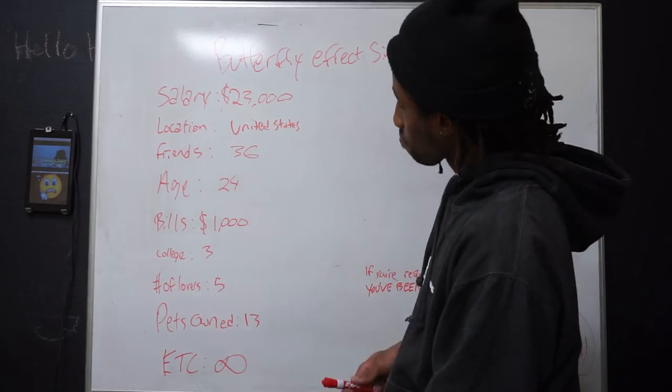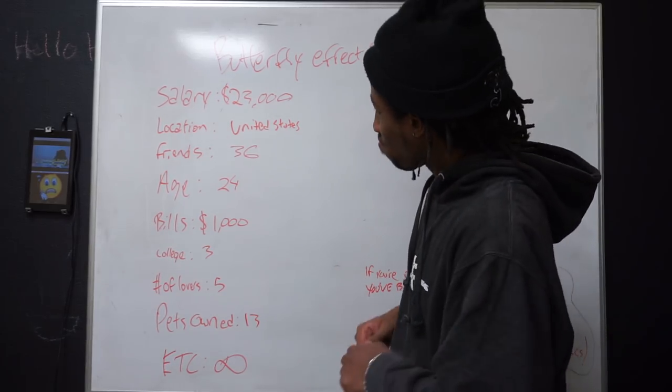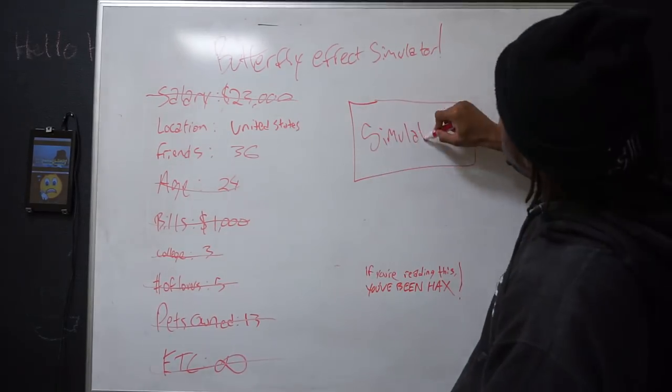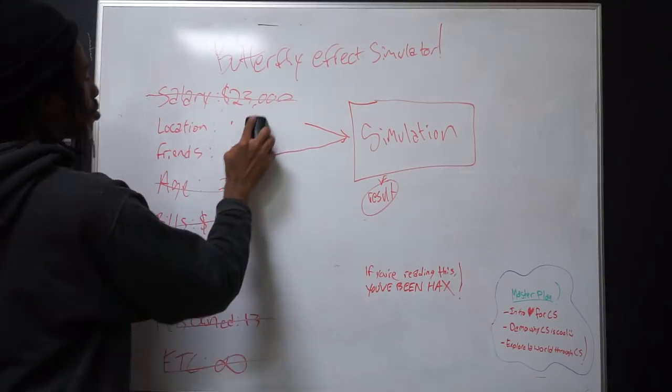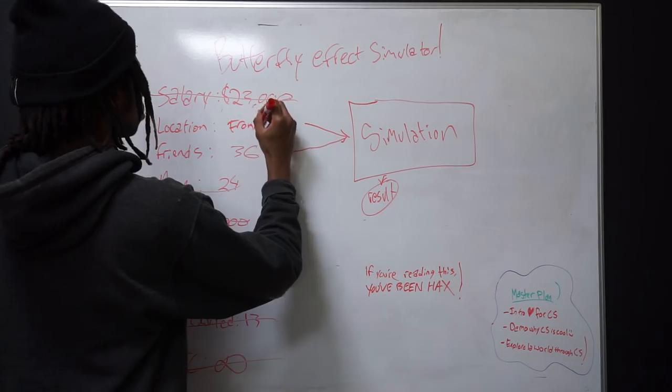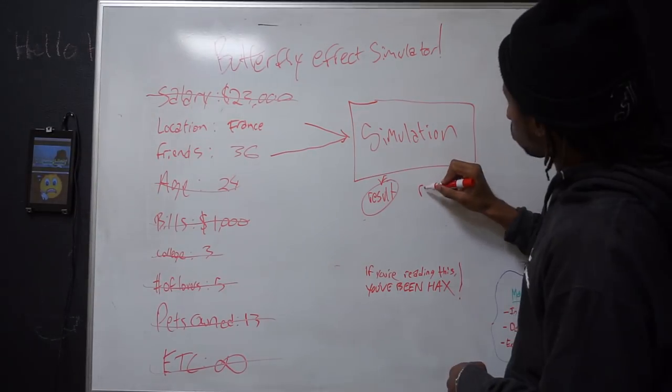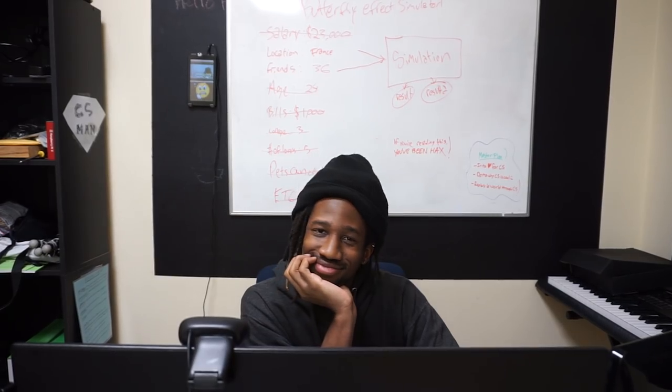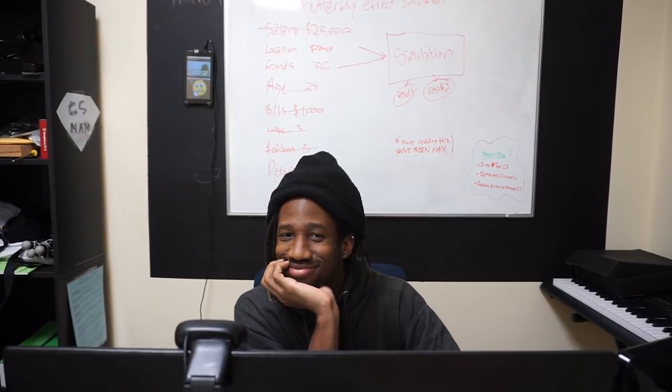However, as software developers, we can kind of sort of mimic this whole process by writing a simulator with a lot less variables. We will be able to run our simulator and then make changes to the initial variables like Pierre and his family not moving to the U.S., for example, and somewhat observe the butterfly effect phenomenon. And with that, I think I got a great idea for a butterfly effect simulator.